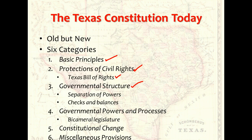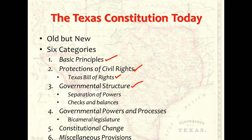Governmental Structure. Every state constitution deals with the structure of government at both the state and local levels. A few follow the national pattern, providing only a broad outline. Most, however, cover the subject of governmental organization at length, and often in great detail. As in all states, the Constitution of Texas provides for the separation of governmental powers into three separate branches: executive, legislative, and judicial. Like all other states, Texas creates a system of checks and balances, prohibiting any branch from exercising powers that are attached to another branch.